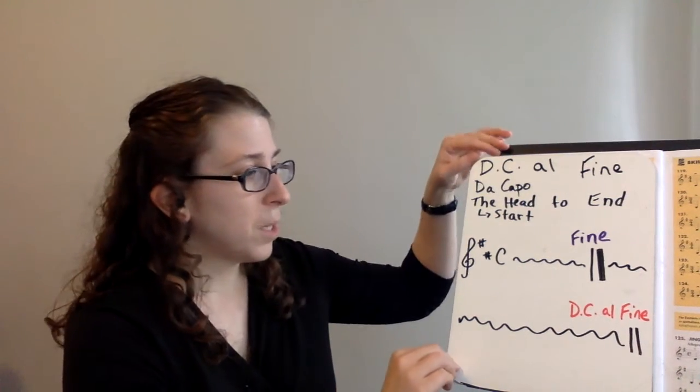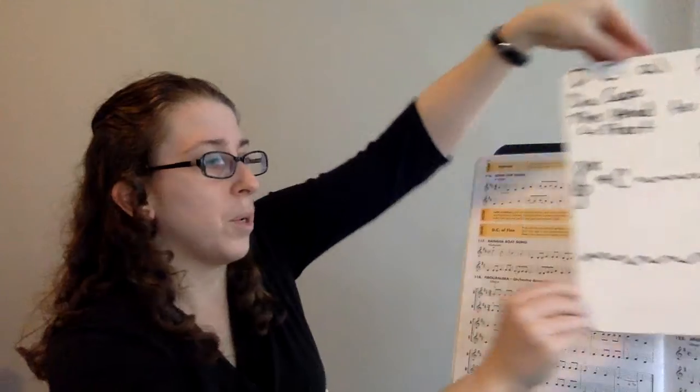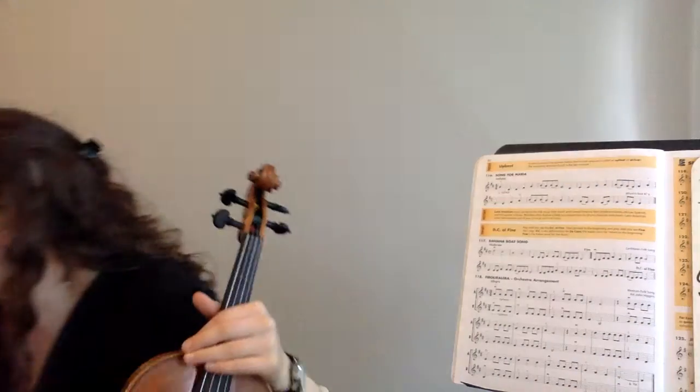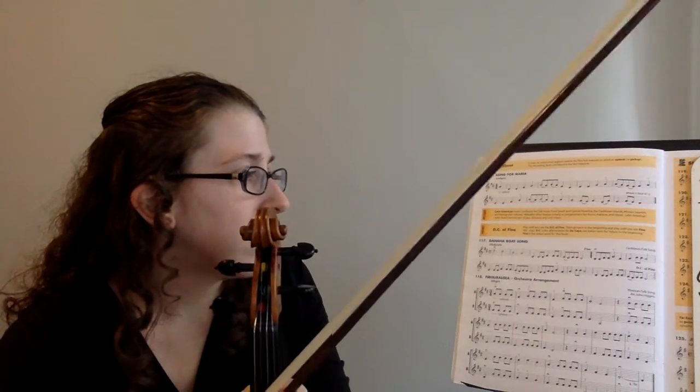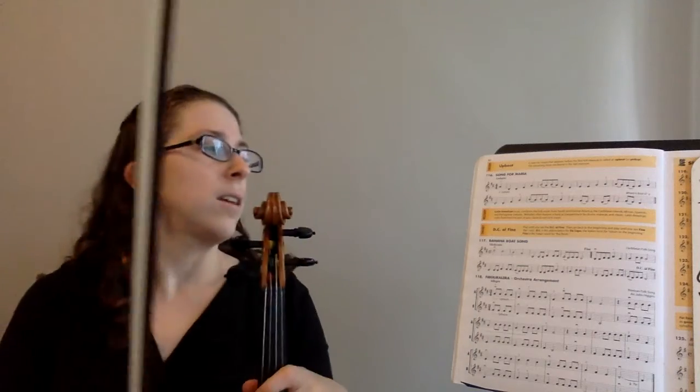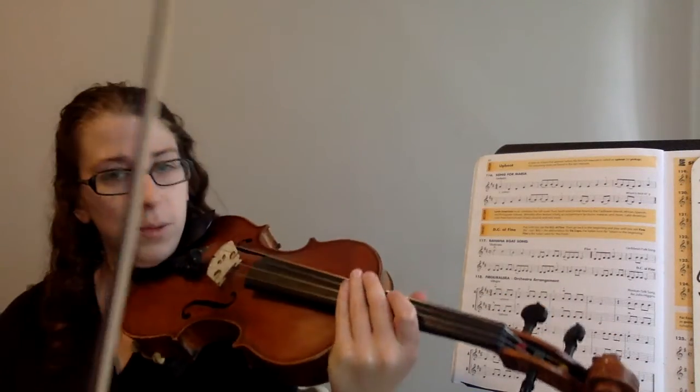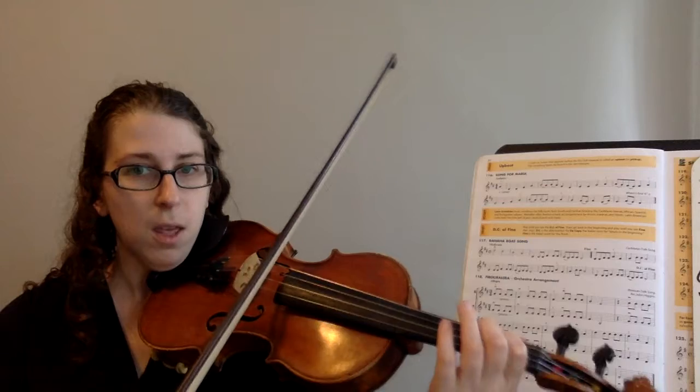So now that we know how the structure of the piece looks, let's look at Banana Boat Song. We have some slurs coming on in this one. So we're going to practice those first, isolate them. So the first one is in measure four. And it's from E to D. So let's practice that a couple of times. Ready? And.